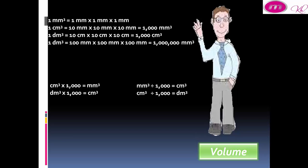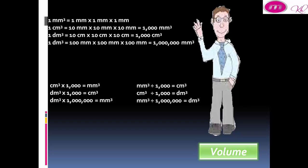One decimeter cube equals 100 millimeter by 100 millimeter by 100 millimeter, equal to one million millimeter cube. When we change from decimeter cube to millimeter cube, we multiply by 1,000,000. When we change from millimeter cube to decimeter cube, we divide by 1,000,000.